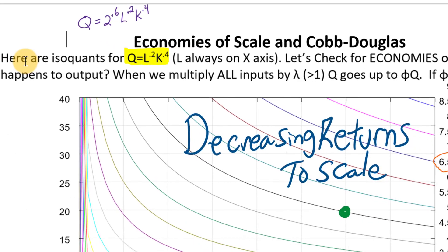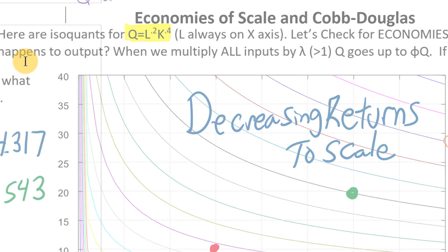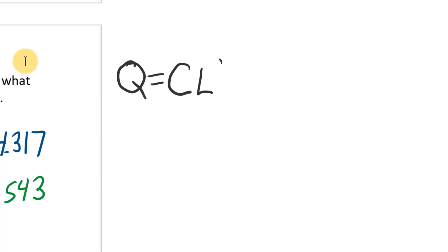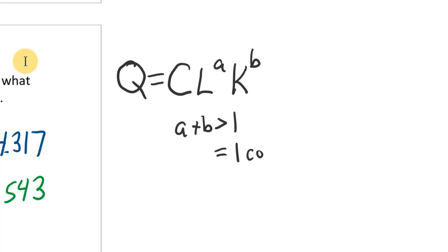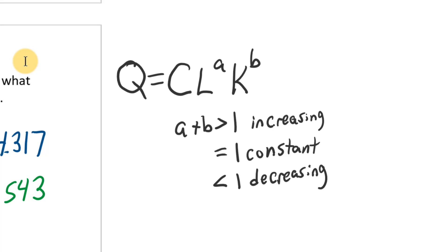So the rule for a Cobb-Douglas production function — any constant times L to some exponent times K to some exponent — is: if a plus b, the sum of the exponents, is greater than 1, we have increasing returns to scale; if equal to 1, constant returns; if less than 1, decreasing returns. The constant out front doesn't matter. It's really the sum of those two exponents that determines whether you have increasing, decreasing, or constant returns to scale.